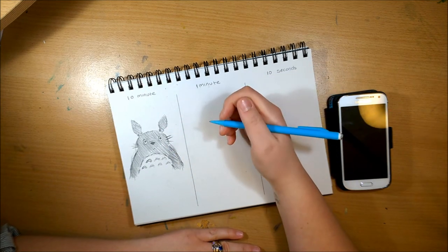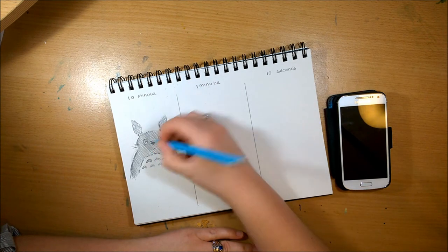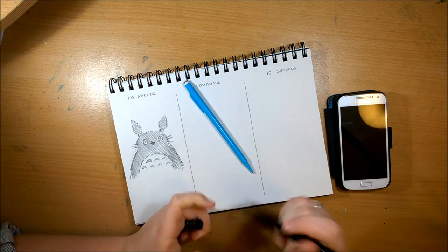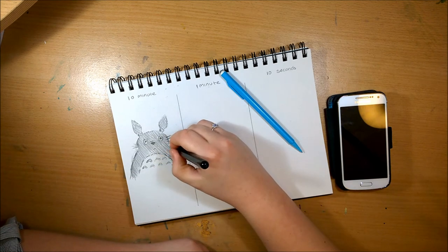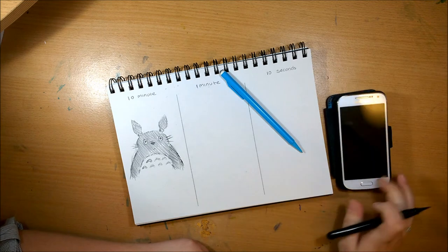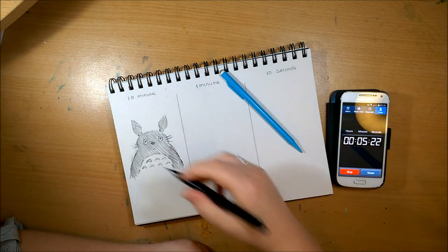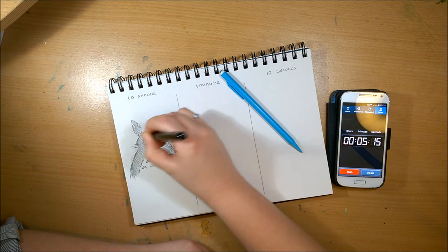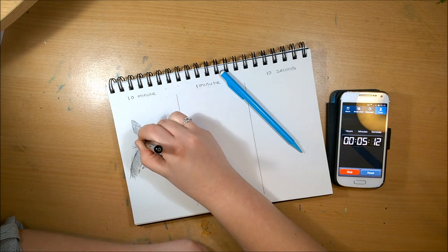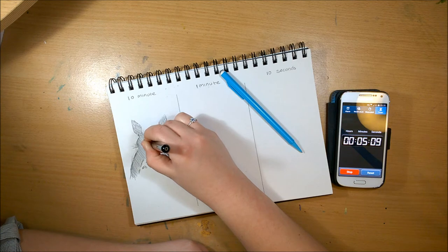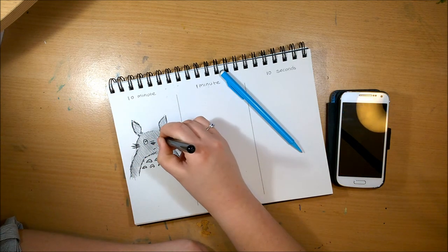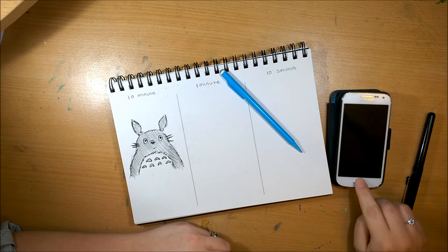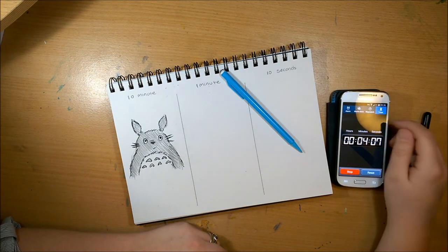I might actually get my Pentel brush pen and outline him to define some of the lines a bit more. I can guarantee I probably won't get time to do that on the 10-second one, but I still have so much time. I've even been trying to take my time on this. Wow, this paper does not like my brush pen. We've got four minutes to go.